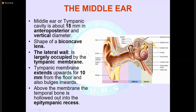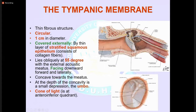The middle ear or tympanic cavity is about 15 mm in anteroposterior and vertical diameter, shaped like a biconcave lens. The lateral wall is largely occupied by the tympanic membrane, which extends upwards 10 mm from the floor. The tympanic membrane is a fibrous circular structure, one centimeter in diameter, covered externally by stratified squamous epithelium. It lies obliquely at 55 degrees with the external auditory meatus, facing downwards and forwards laterally.